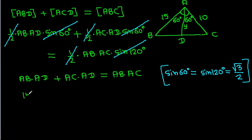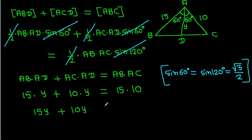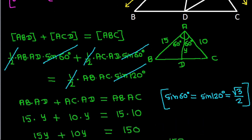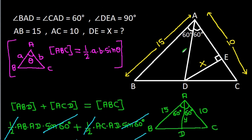Substituting values: AB is 15, AD is Y, AC is 10, so we get 15Y plus 10Y equals 15 times 10, which is 150. Therefore 25Y equals 150, so Y equals 6. Thus AD is 6.